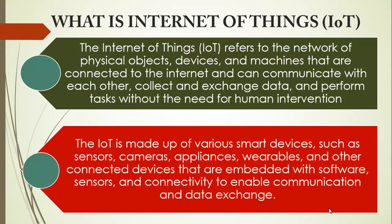We now move to Internet Protocol. What is Internet Protocol? The Internet is built on a system of protocols or rules that govern how data is transmitted and received — this is what we refer to as Internet Protocol. By definition, Internet Protocol is a set of rules that govern the way data packets are transmitted over the Internet. It provides a unique address, usually referred to as an IP address, to each device connected to the Internet, allowing them to communicate with each other. The Internet Protocol is responsible for routing data packets between devices and ensuring they arrive at their intended destination.